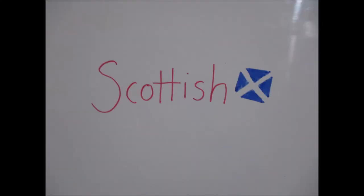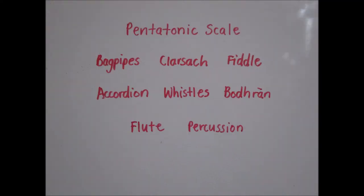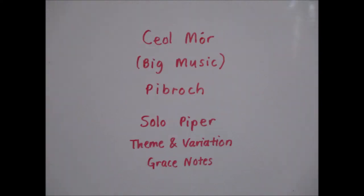Scottish music. Scottish music is part of the Ceilidh tradition. At Ceilidhs, there's music, poetry, stories and dance. Scottish music is written against a pentatonic scale, made up of five notes — these are the black notes that you'd find on the piano. Scottish instruments include bagpipes, clarsach, fiddle, accordion, whistles, bodhran, flute and percussion. Ceòl beag, meaning light music in Gaelic, includes the dances of Strathspey in 4-4 with dotted rhythms and scotch snaps, reel in 2 or 4-4, jig in 6-8, waltz in 3-4 and march in 2-4 or 4-4. Ceòl mòr, meaning big music in Gaelic, sometimes also called piobaireachd, is songs for solo piper, based on theme and variation, and with lots of grace notes.